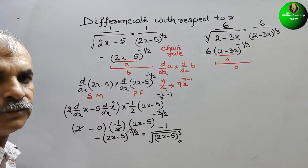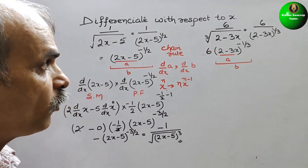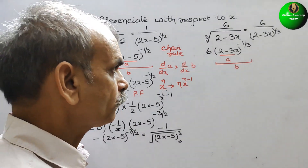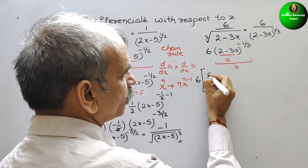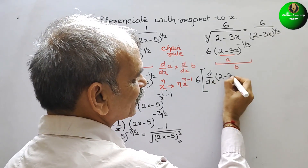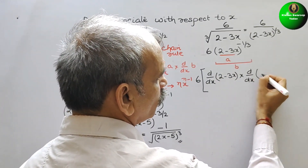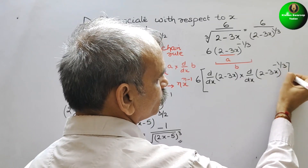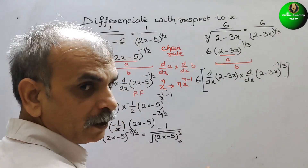Now for the second part: we have 6 into 2 minus 3x to the power minus 1 by 3. We write 6 outside. Applying the chain rule: d by dx of 2 minus 3x — that is 'a' — into d by dx of (2 minus 3x) to the power minus 1 by 3, which is 'b'. So we go for scalar multiple, and here 2 minus 3x to the power minus 1 by 3.